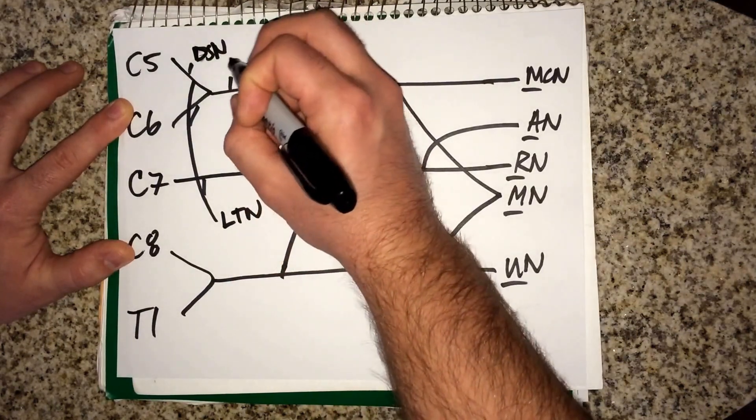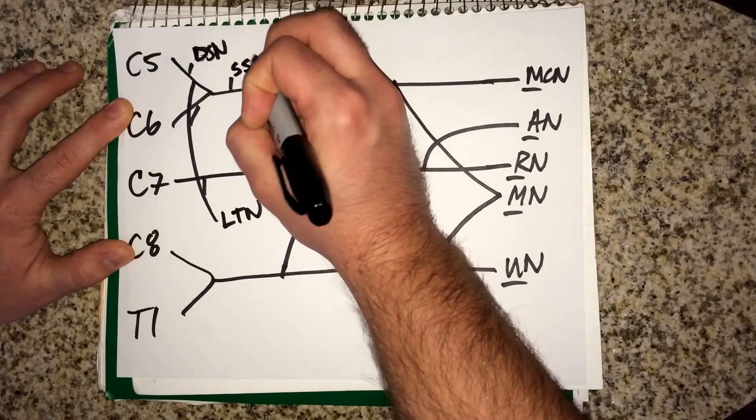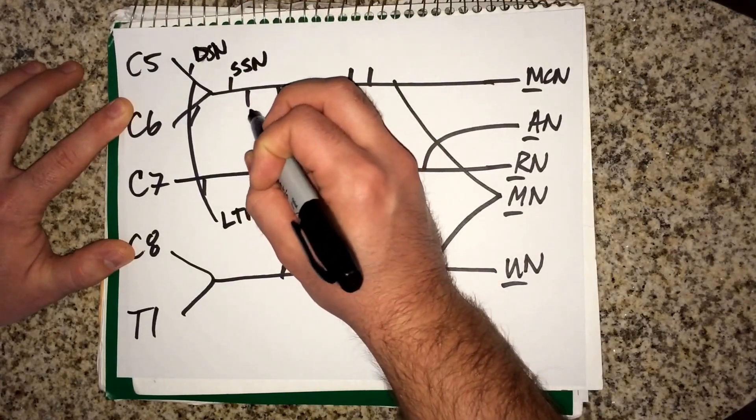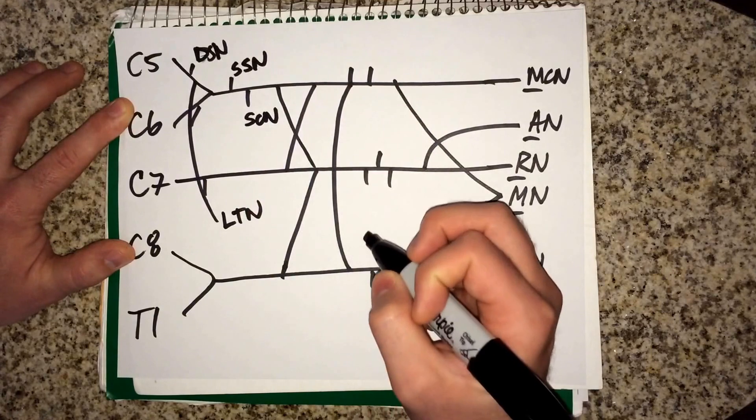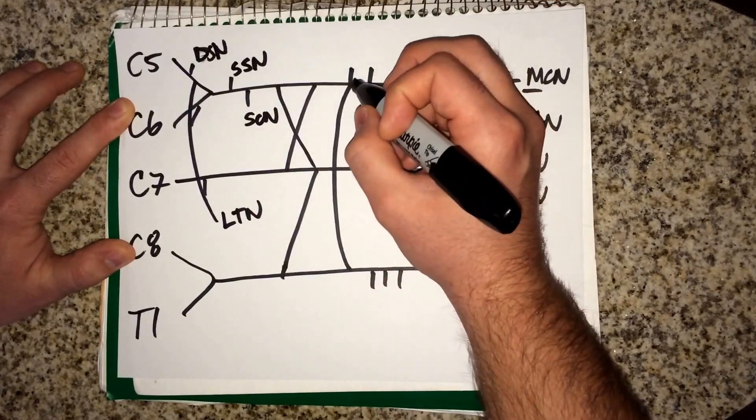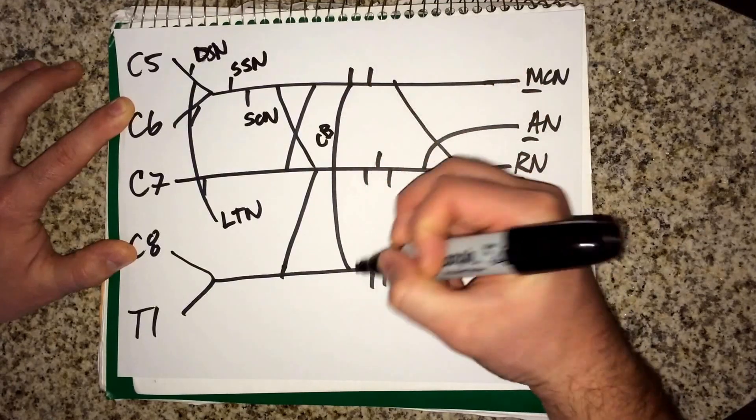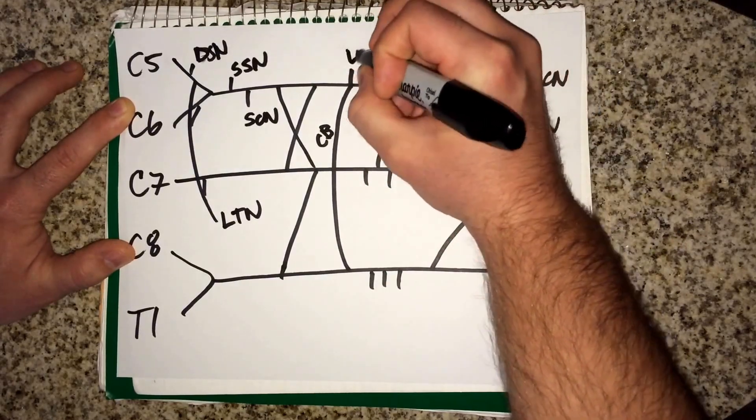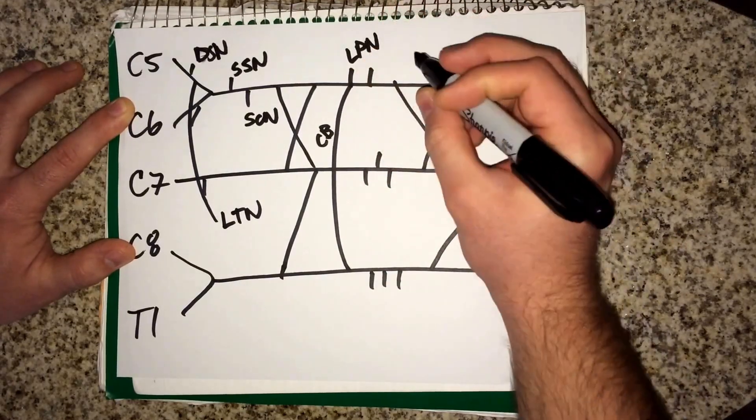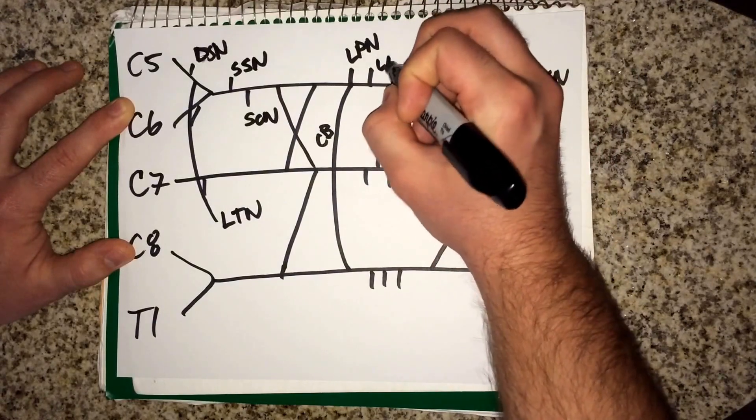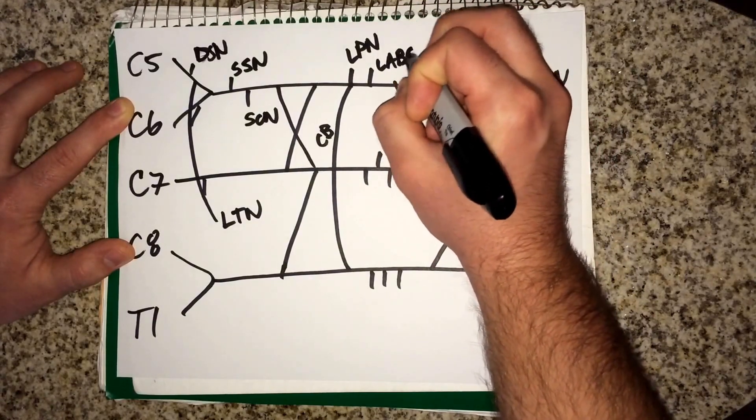The one that comes up is your suprascapular nerve. This one that comes down is your subclavian nerve. The one that comes up off this communicating branch, that's what this is called, this is your lateral pectoral nerve.